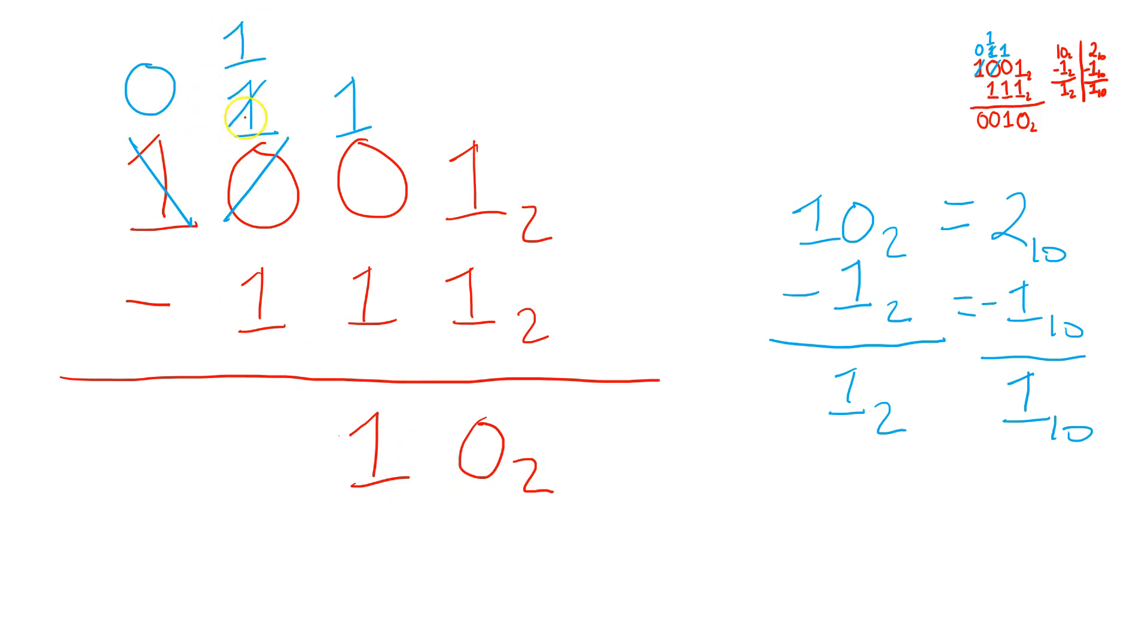Then over here now, notice I struck off the 1 in blue and the 0 in red. So I have only the 1 up there minus the 1 down below. That's going to give me a 0. And I copy the other 0 down like this. And this is an example of doing subtraction in binary with carrying.